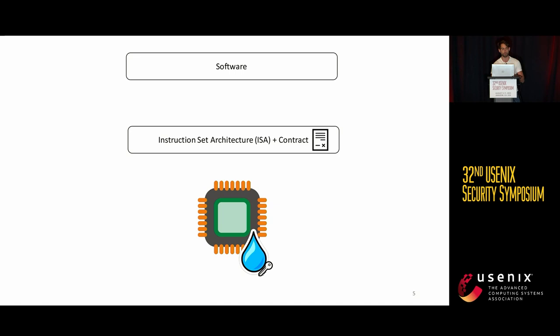We have a tool to describe the information leakage that we can expect from a target CPU, which is a contract for secure speculations. These have been already used to model information leakage for Spectre-like vulnerabilities and branch misprediction.